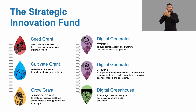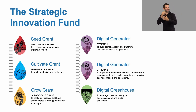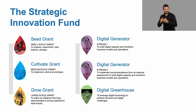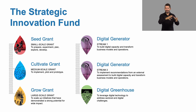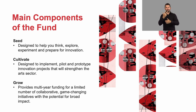The Strategic Innovation Fund aims to build a more inclusive, resilient, sustainable art sector. It includes three main components – SEED, Cultivate and Grow – and two support components: Digital Generator and Digital Greenhouse. To support bold ideas to transform the art sector, the Strategic Innovation Fund offers three main funding components.